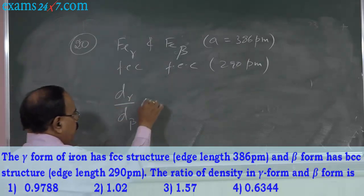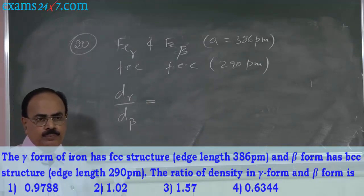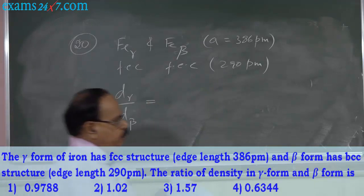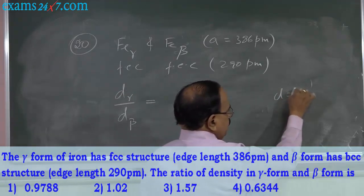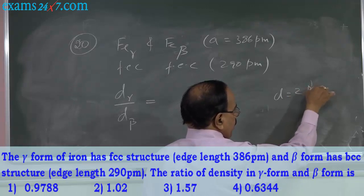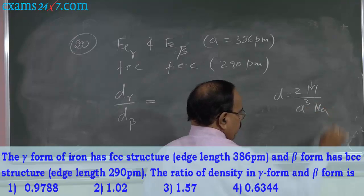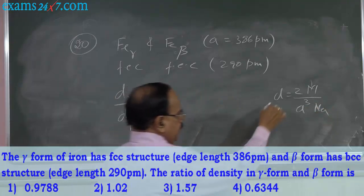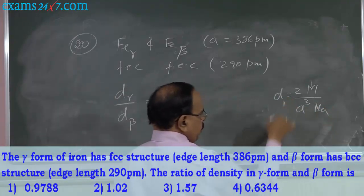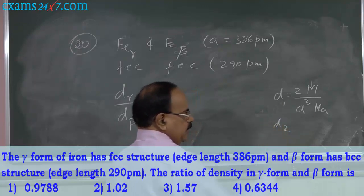Now, how can we calculate this? It appears to be a very difficult problem. Using the formula D = ZM / (A³ · NA), we can easily write. How can we say that this is D1 and D2, or this is D_gamma and this is D_beta?